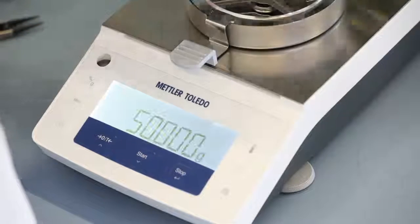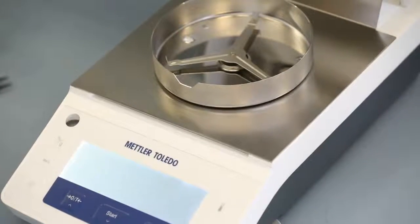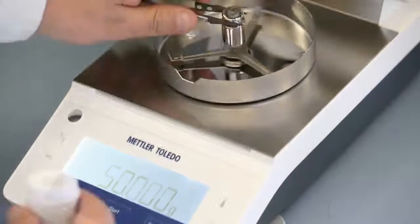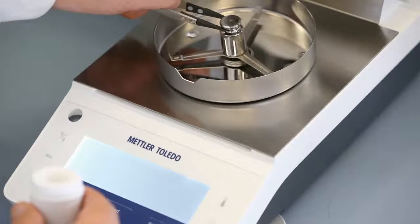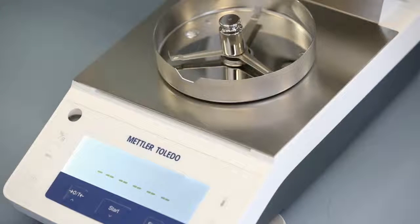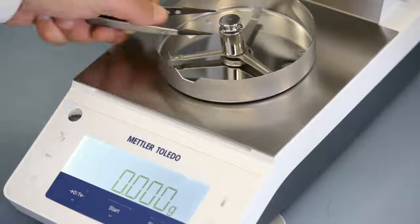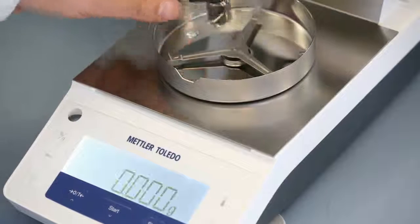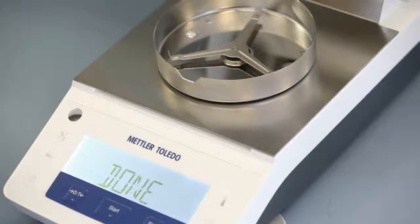The instrument instructs you to place a 50 gram weight on the weighing pan and then to remove the weight. After removal of the weight, the adjustment procedure is finished.